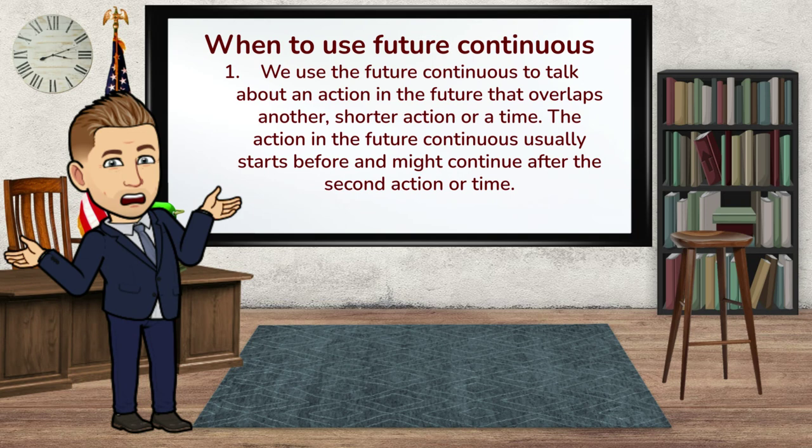There are two rules with future continuous — it's pretty short and quick to explain. We use the future continuous to talk about an action in the future that overlaps another shorter action or a time. The action in the future continuous usually starts before and might continue after the second action or time.